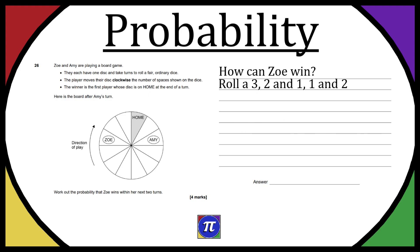When we ask ourselves how can Zoe win, we can say that she can roll a 3, a 2 and a 1, or a 1 and a 2. To work out the probability of her winning, it will be the probability of all of these added together. So the probability of her getting a 3, the probability of her getting a 2 and a 1, and then the probability of her getting a 1 and then a 2.